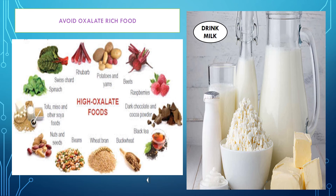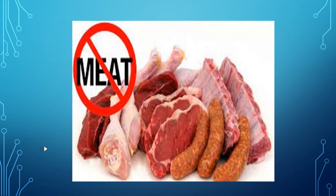Apart from this, you should try to avoid taking excessive salt because sodium increases the risk of kidney stones. Avoid excessive spices and oil in your diet as well. If you are prone to recurrent uric acid stones, it is high time you say no to animal meat, as animal protein can increase the deposition of uric acid in your kidneys.